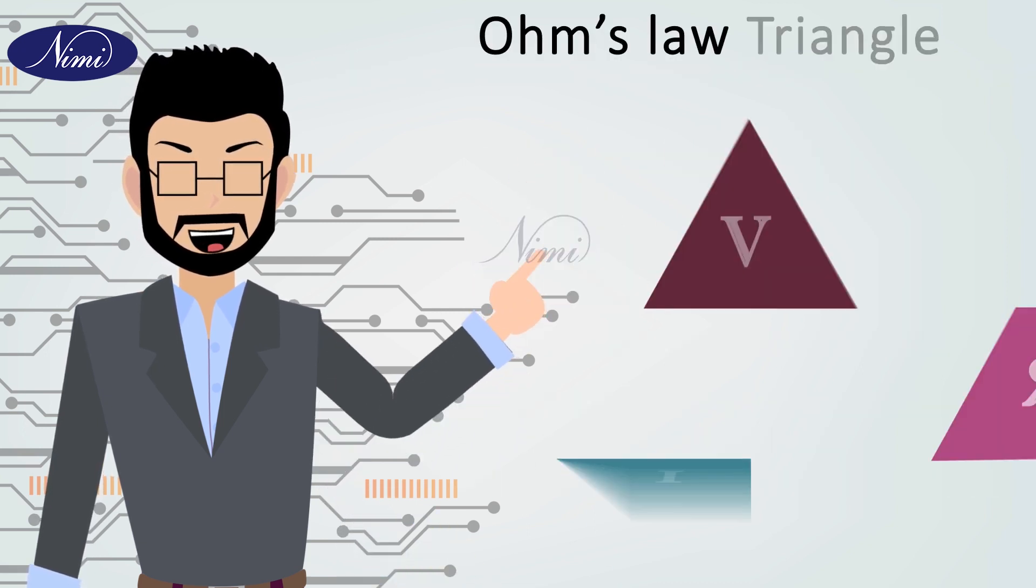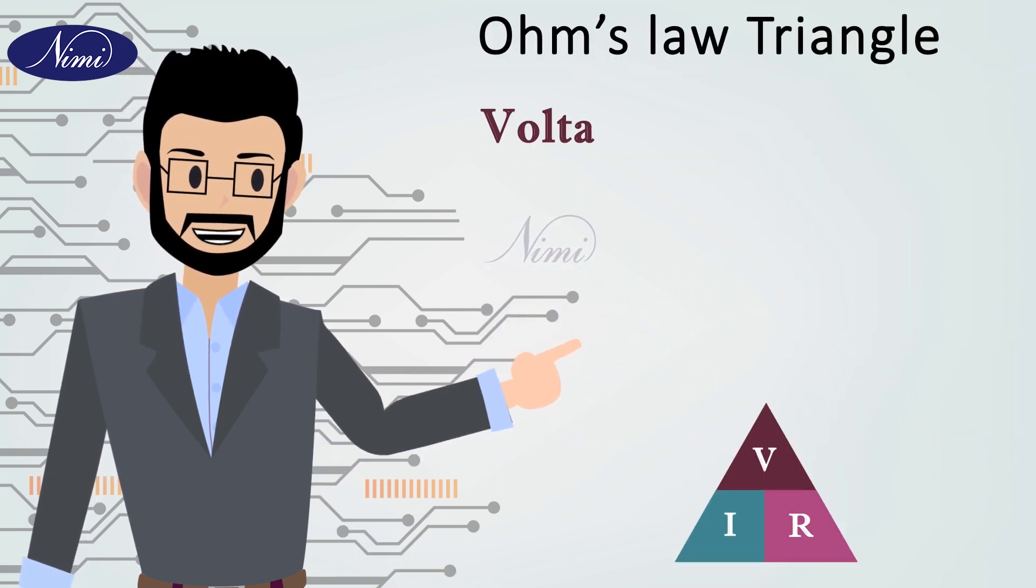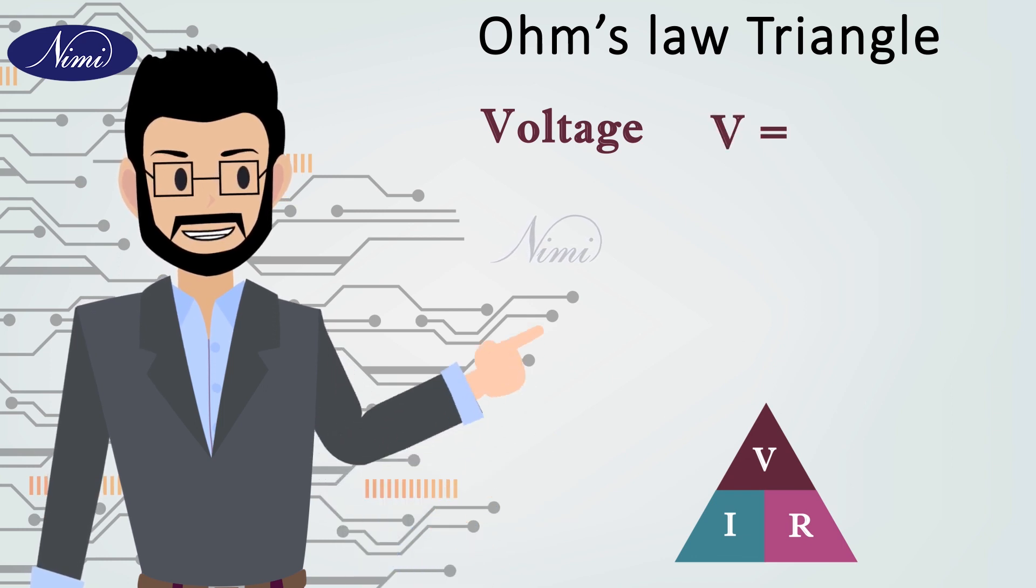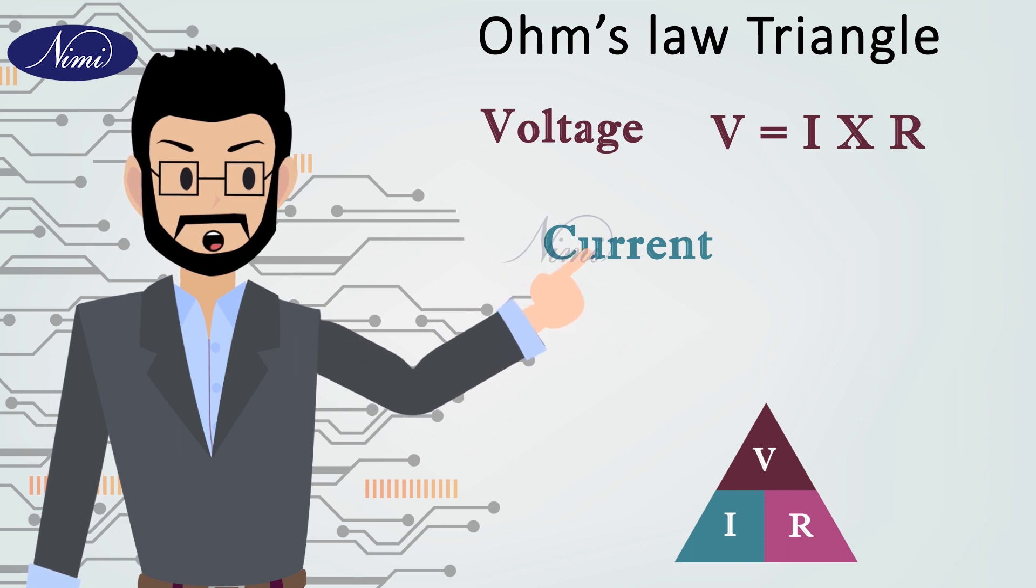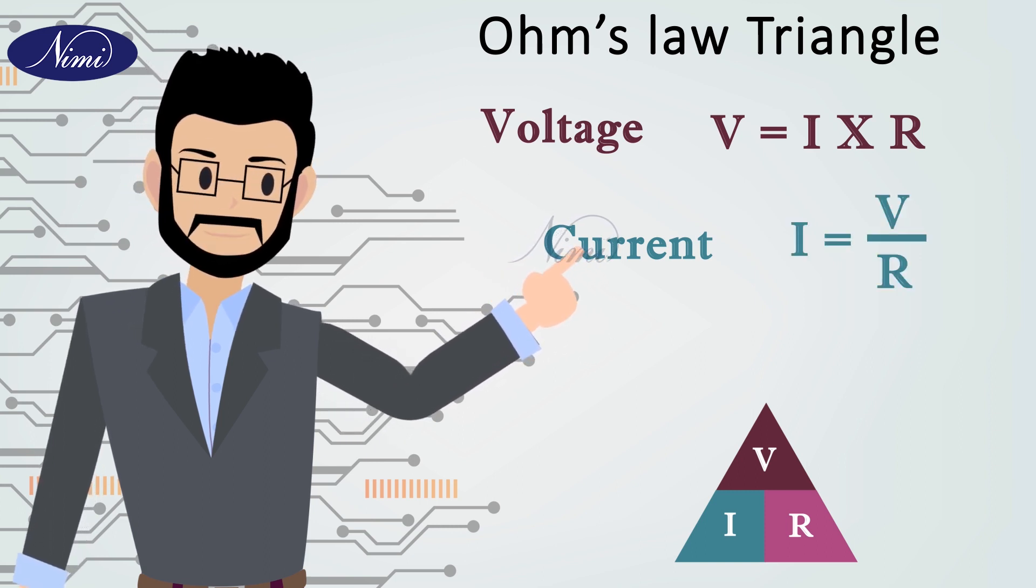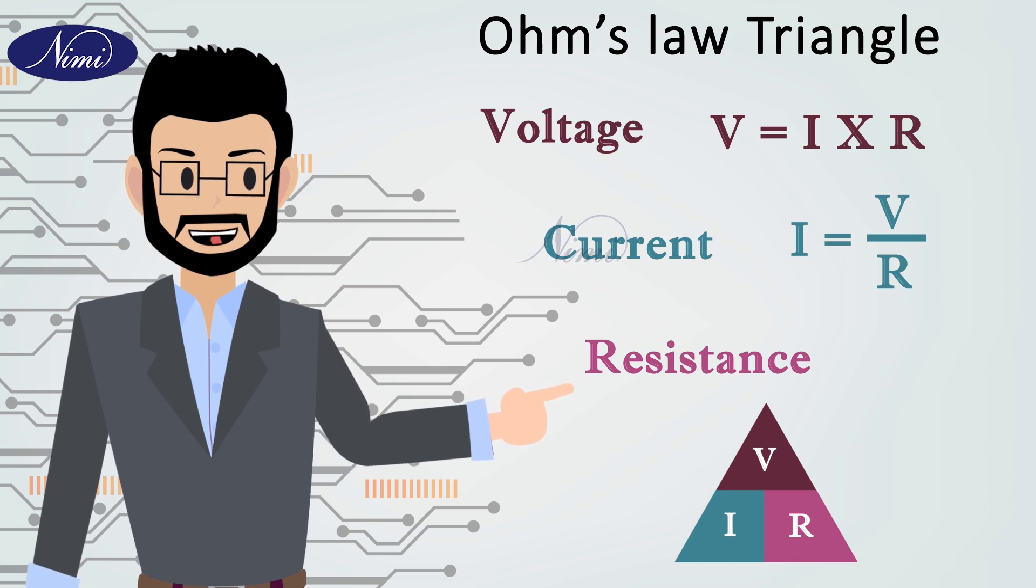From this Ohm's law triangle, voltage can be obtained by using the formula V is equal to I into R. And current can be obtained by using the formula I is equal to V by R. And resistance can be obtained by using the formula R is equal to V by I.